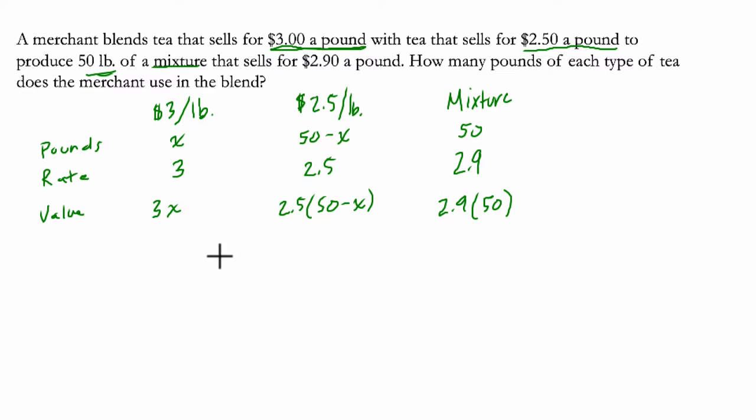Now we can just put these things together, right? Essentially, we take our first value, the 3X here, and we add it to our second value. These are the combinations of the teas and their appropriate rates in pounds. And we know it's got to equal $2.90 for 50 pounds.